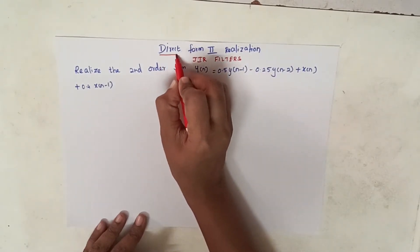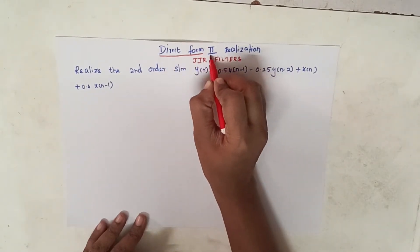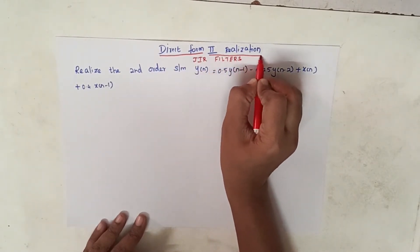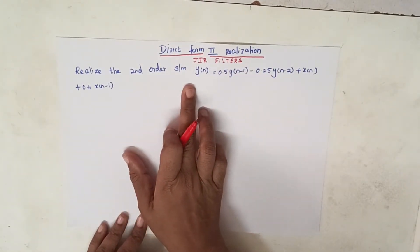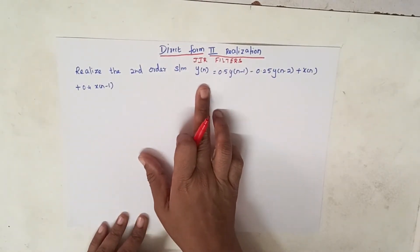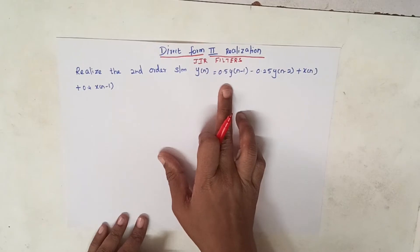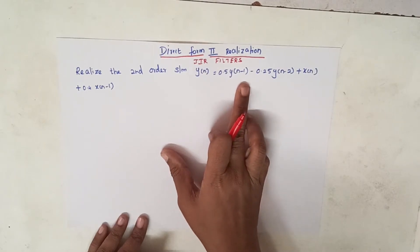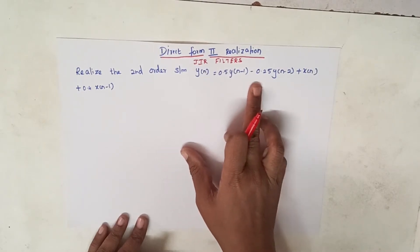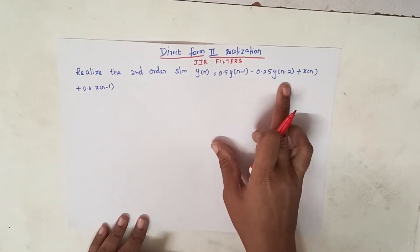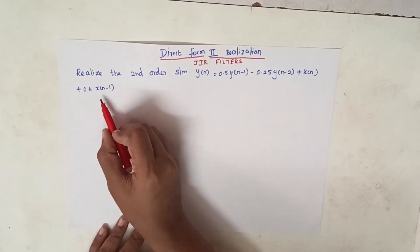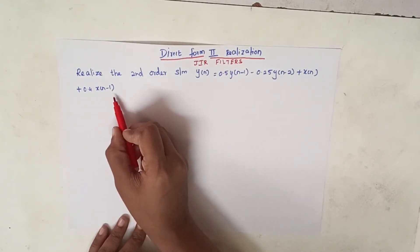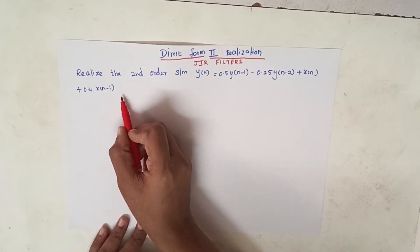Let us consider this problem: Realize the second order system y(n) = 0.5·y(n−1) − 0.25·y(n−2) + x(n) + 0.4·x(n−1).